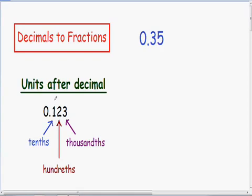Here we have 0.123. Let's take a look at our units. Notice the first unit to the right of the decimal is our tenths unit. Notice how our second unit to the right of the decimal is our hundredths unit. And notice the third unit to the right of the decimal is our thousandths unit. It's really important to have these units memorized.